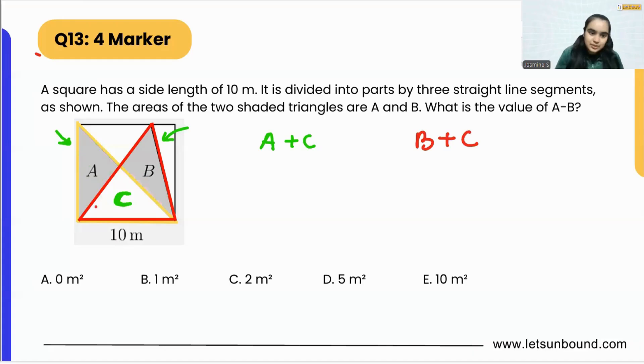If we focus on the yellow triangle, the base is 10 and even the height is 10, because it's a square, so all four sides are the same. The bottom will be 10 and even the height will be 10.